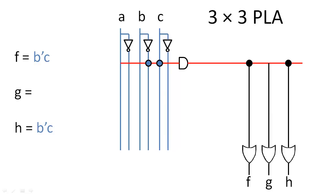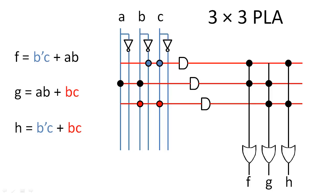Now that we have our expressions, we will connect the rails of our PLA to implement each product term. And then, we will connect these product terms to OR gates to produce our outputs.